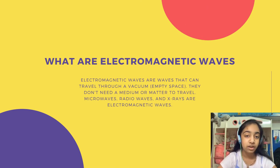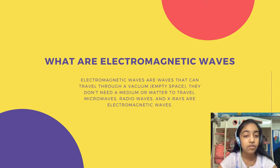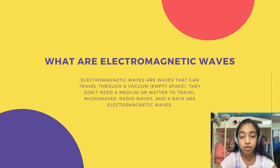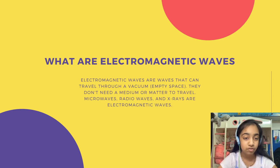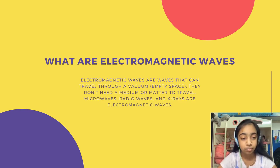Electromagnetic waves are waves that can travel through a vacuum — they do not need any matter or medium to travel, just through empty space. Microwaves, radio waves, and X-rays are examples of electromagnetic waves.